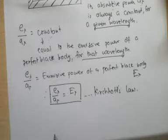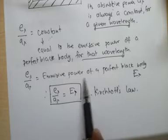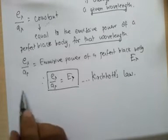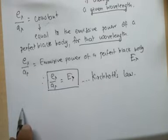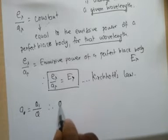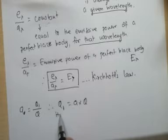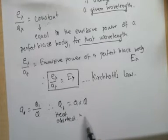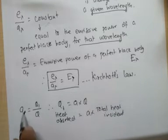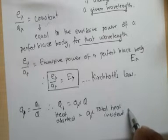It is easy to understand, based on experiments, how this ratio turns out to be constant and equal to the emissive power of a perfect black body. Let us revise a couple of things from previous videos. We have said that A_lambda, or simply A, equals Q1 upon Q, therefore Q1 equals A times Q. In words: heat absorbed equals A times total heat incident. Using A_lambda makes it specific for a particular wavelength range, so heat absorbed equals A_lambda times total heat incident.